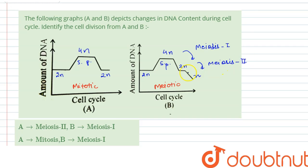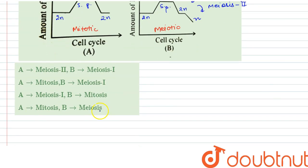It will half the amount of DNA again. Hence we can say that cell cycle A is the mitotic division while cell cycle B is meiosis. So our answer will be A is mitosis while B is meiosis.